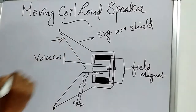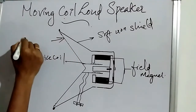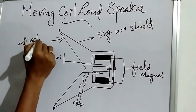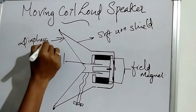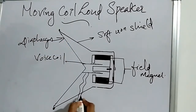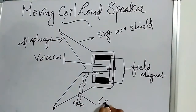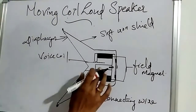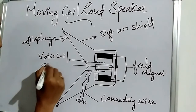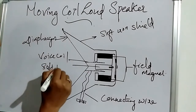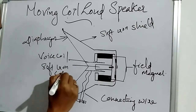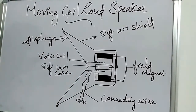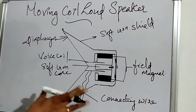The next component is the diaphragm. Then there is the connecting wire, and finally the soft iron core. These are the main components in a moving coil loudspeaker.